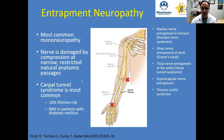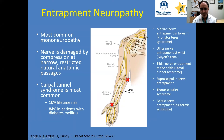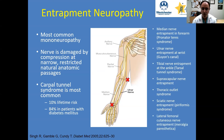Thoracic outlet refers to entrapment of the brachial plexus in the triangle of the neck bounded by the clavicle, the trapezius, and sternocleidomastoid muscles. The sciatic nerve can be entrapped in piriformis syndrome. The lateral femoral cutaneous nerve entrapment is called neuralgia paresthetica. This is a short list, but it gives an idea that there are multiple different sites of entrapment.